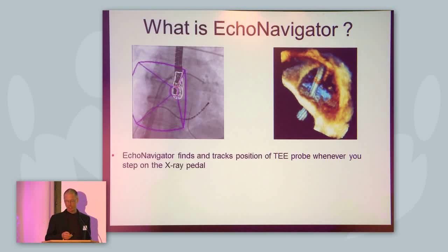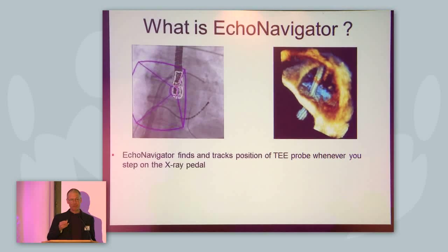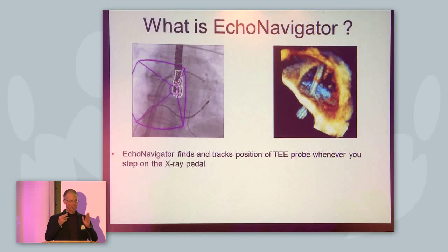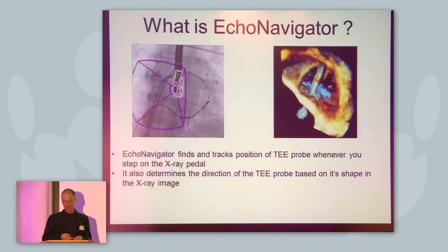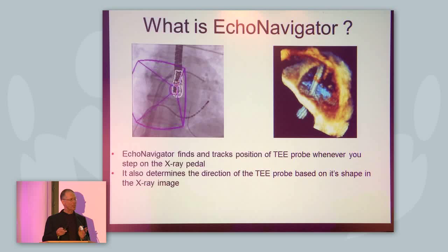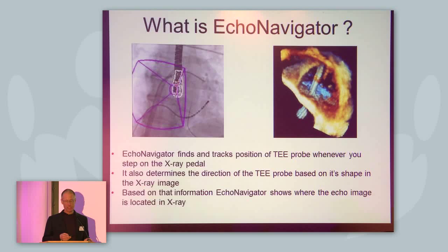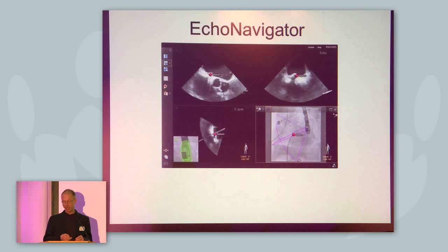So what is the echo navigator? It basically finds the position of the TEE probe on fluoro and recognizes where the TEE probe is whenever you step on the pedal. It also determines the direction of the TEE probe on fluoro, so it can correlate the images obtained by fluoro and echo. Based on that information, the echo navigator shows where the echo image is located in x-ray.